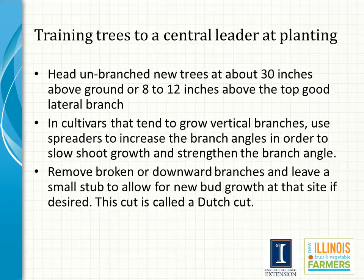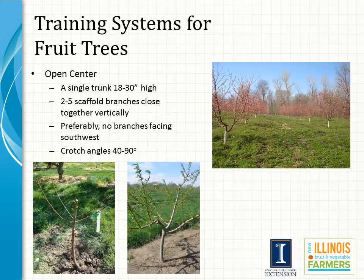After a year of growth, head the central leader about one-third the length of the new shoot that grew the first year. Several shoots should develop just below the heading cut. If the first set of scaffolds is vigorous and begins to grow too upright, they should be spread using one of several methods to a 45 to 60 degree angle.